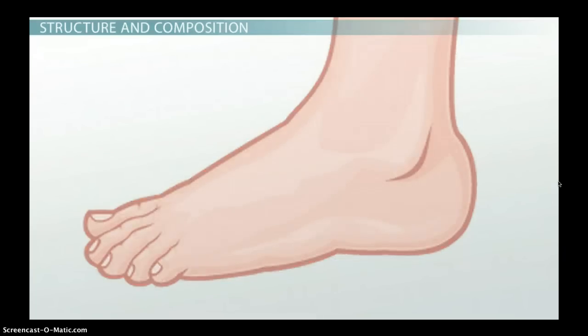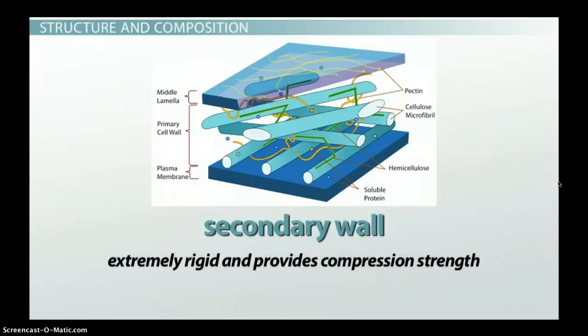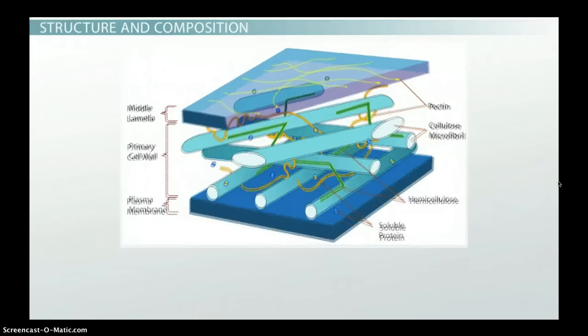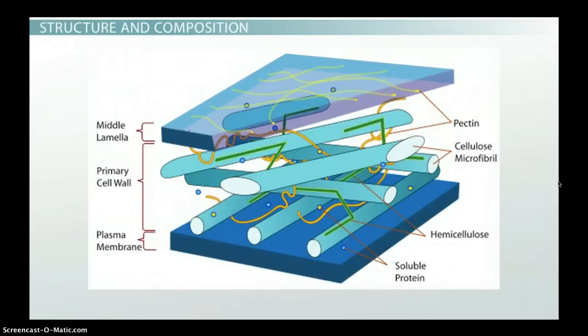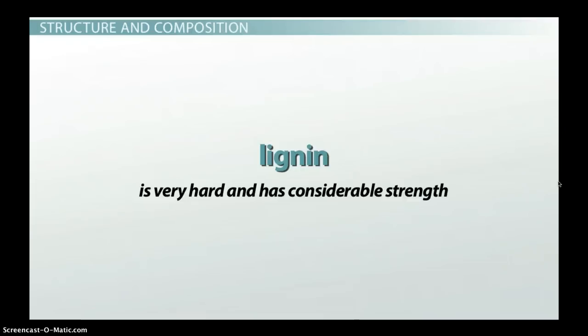The third and final layer is the secondary wall. This layer is extremely rigid and provides compression strength. It helps stop the plant from getting squished. The secondary wall has a very similar composition as the primary wall, only it has more stuff in it. It contains lignin, which is very hard and has considerable strength. The secondary wall also protects the plant from invading bacteria or fungi.